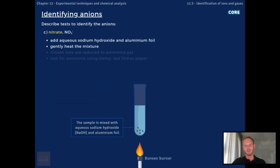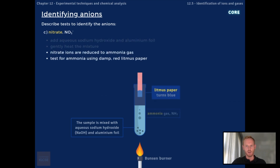To test for the presence of nitrate ions, NO3⁻, add aqueous sodium hydroxide and aluminium foil to the sample and gently heat the mixture. If nitrate ions are present, they'll be reduced to ammonia gas, which turns damp red litmus paper blue.